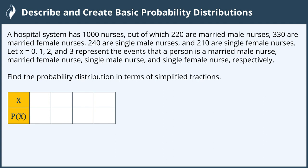Let x equal 0, 1, 2, and 3 represent the events that a person is a married male nurse, married female nurse, single male nurse, and single female nurse, respectively.